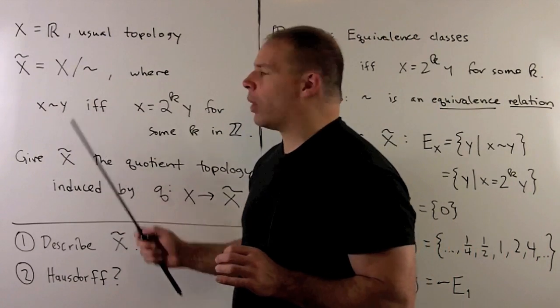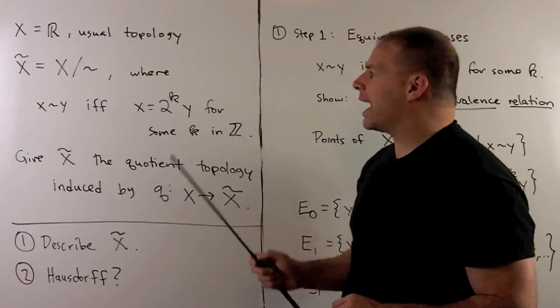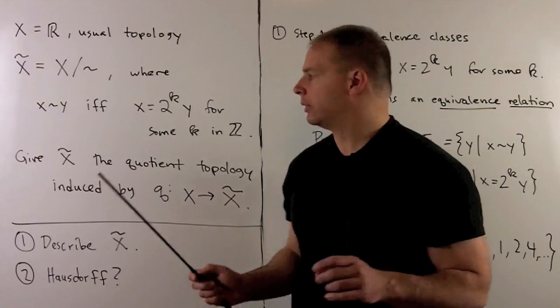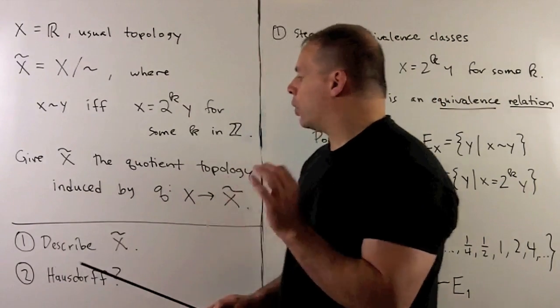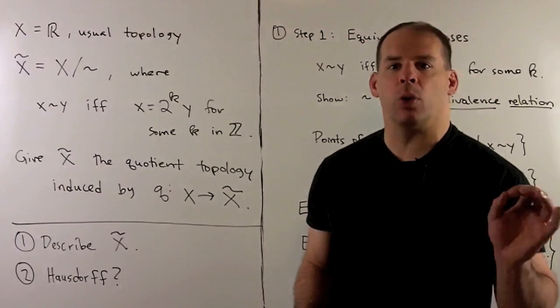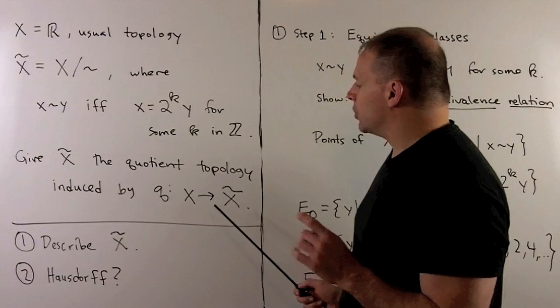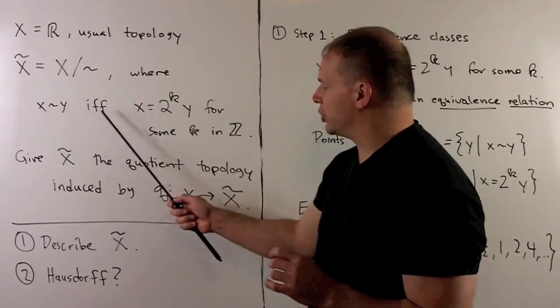We'll have x and y, real numbers are related, if and only if x and y differ by a multiple of an integral power of 2. Then we're going to give x tilde the quotient topology induced by the quotient map that sends the real line to x tilde. So here we're just going to take each real number, send it to its equivalence class under our relation.